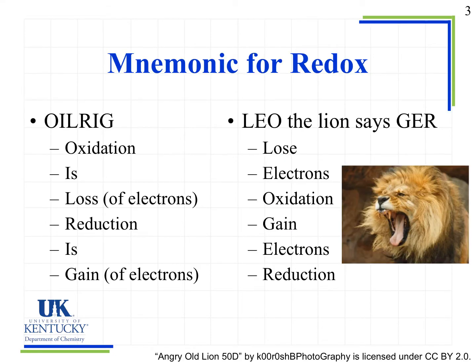Here are a couple of mnemonics to help you remember redox. The first is OIL RIG: Oxidation Is Loss of electrons, Reduction Is Gain of electrons. The second is LEO the lion says GER: Lose Electrons Oxidation, Gain Electrons Reduction. These only refer to what's happening with electrons, not oxygen and hydrogen, because redox is specifically defined as the transfer of electrons. Oxygen and hydrogen just become an easier way to identify if redox has occurred in some reactions.